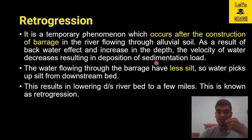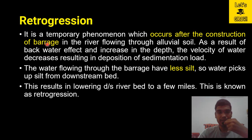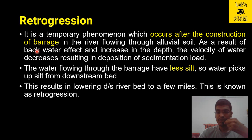Before understanding the term retrogression, let us try to understand it from the beginning — how this phenomenon happens. Suppose there is a river which is flowing and you have constructed a barrage or weir, meaning an obstruction, across the river. Whenever we construct a barrier, there is a backwater effect, which means the water will start to accumulate in the upstream.